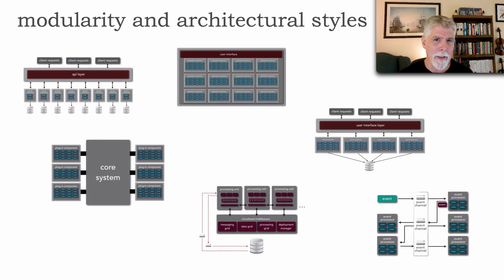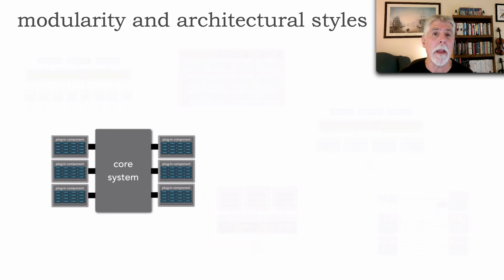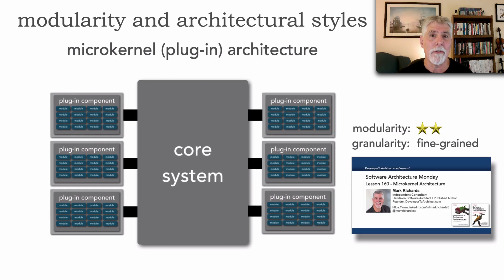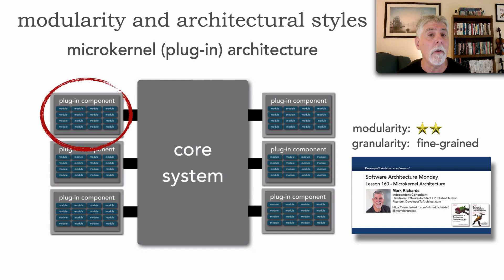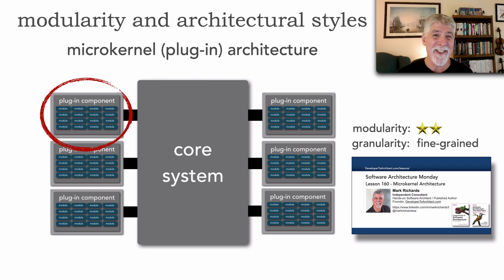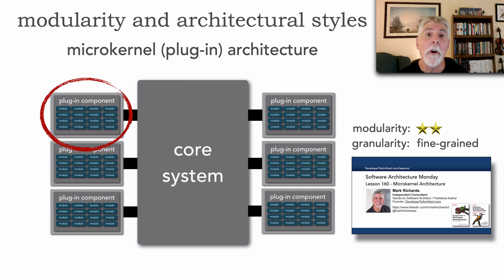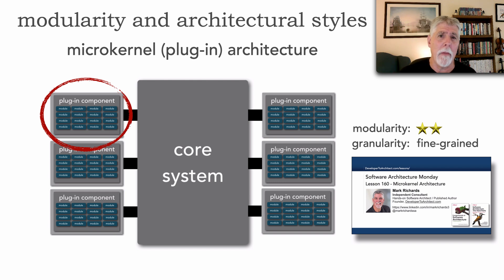Another monolith that also supports a level of modularity is the microkernel or plugin architecture, which I covered in lesson 160. Microkernel architecture gets its level of modularity through the use of plugin components — these are additional features, additional functions; they could be adapters, configuration changes, and many other uses for plugin components. I also gave the microkernel architecture two stars for modularity, because it is a monolith and still has a single deployment unit, which limits the number of stars.